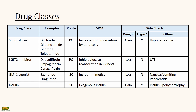GLP-1 agonists, like exenatide, are delivered subcutaneously and they are incretin mimetics. They cause weight loss and do not cause hypoglycemia. Side effects include nausea and pancreatitis.